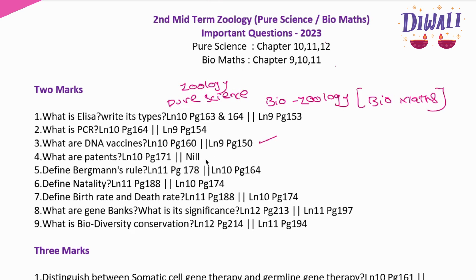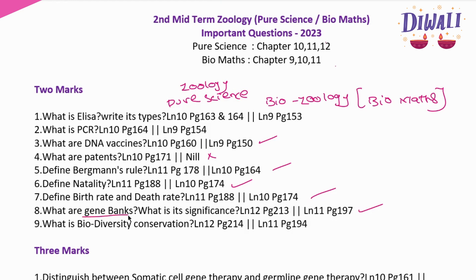Next 2-mark questions: What is PCR? What are DNA vaccines? Very important. What are patents? For bio-max group students, bio zoology probiotics question. For pure science group: PCR, define natality, define birth rate and death rate. What are gene banks? What is its significance? Very very important question on gene banks. What is biodiversity conservation? Lesson 12 and lesson 11 — page numbers to be referred.